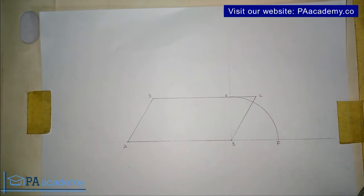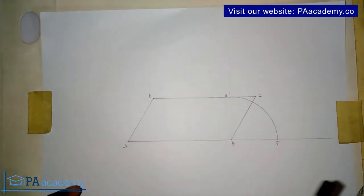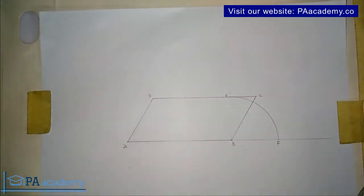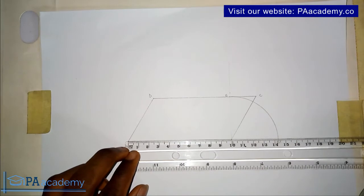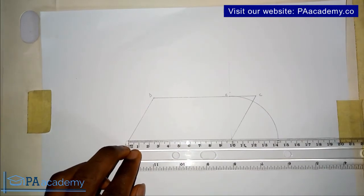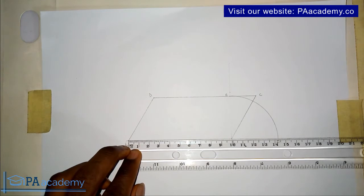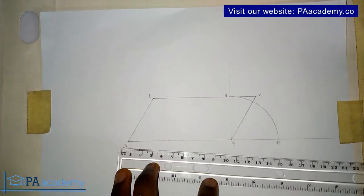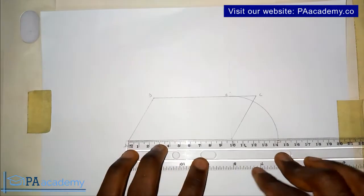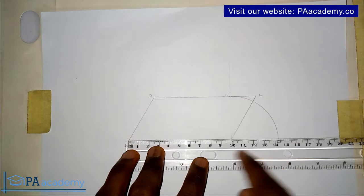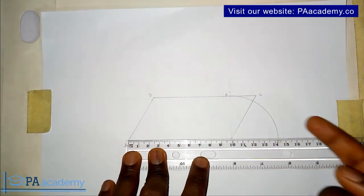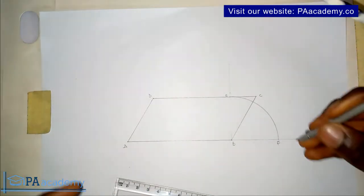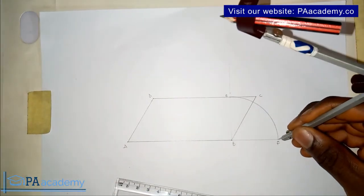The next thing is to draw a semicircle from point A to point F. The length of AF is about 14.3. Look for the middle of AF — there is another way to do this using your compass to measure the length of AF.